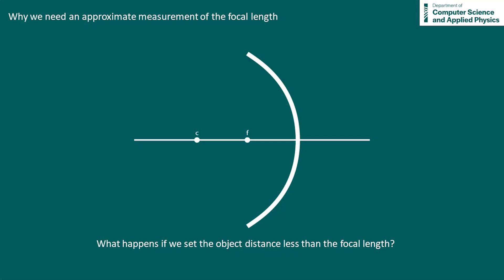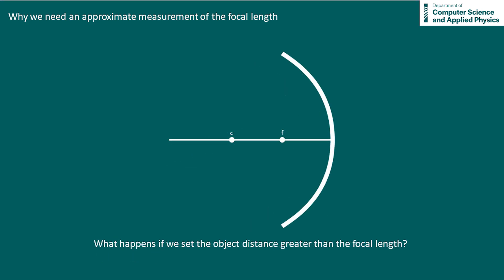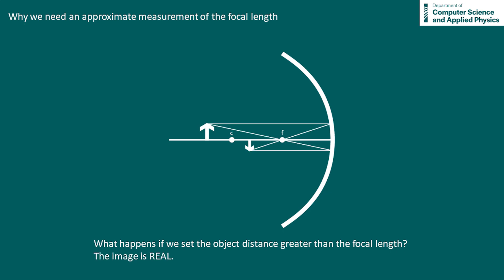So why do we need an approximation of the focal length? If you look at the ray diagram, if we set our object distance to be less than the focal length of the mirror, we'll actually end up with a virtual image and we won't be able to carry out the experiment. Whereas if we set the object distance greater than the focal length, we will have a real image that we can capture on a screen, and that image will be inverted.